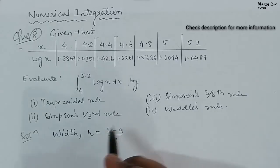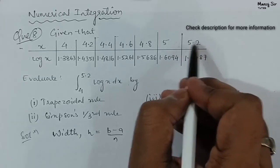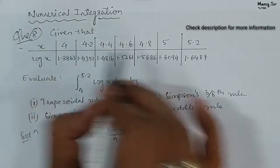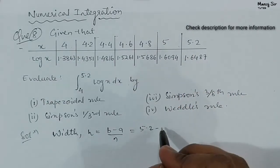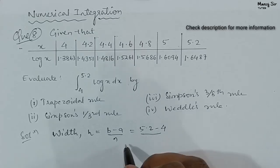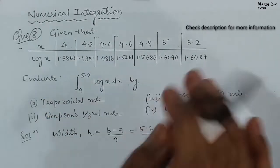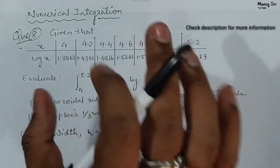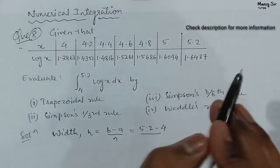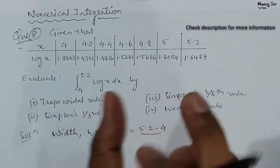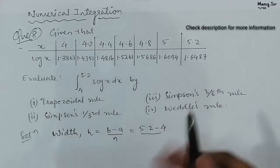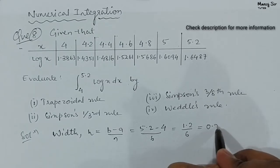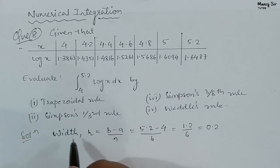Now we have to show this formally. b is the upper limit, that is 5.2, and a is the lower limit, that is 4. n is the number of steps. The number of elements present in the problem is 7, and number of elements minus 1 gives the number of steps, so n equals 7 minus 1, that is 6. Therefore h equals 5.2 minus 4, that is 1.2 upon 6, giving us 0.2. This is the value of small h, the interval size.